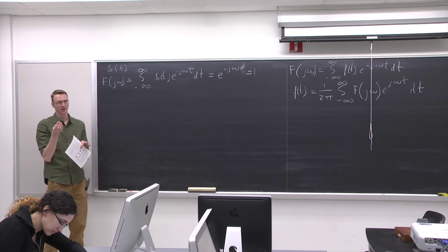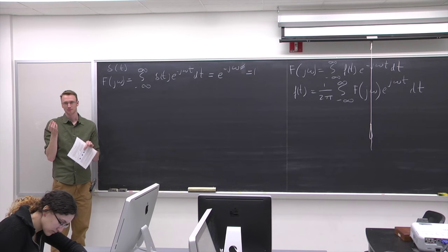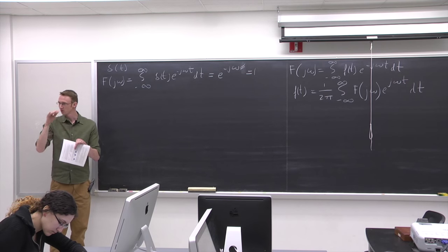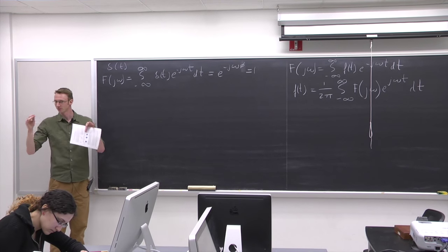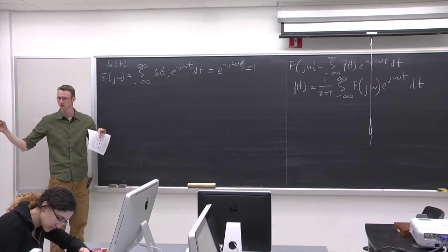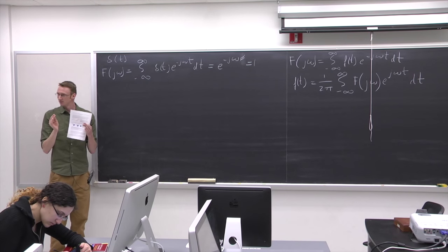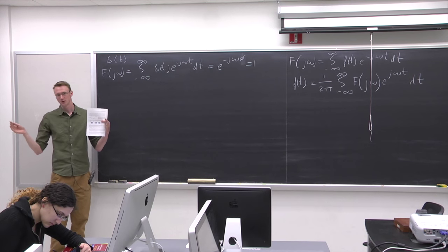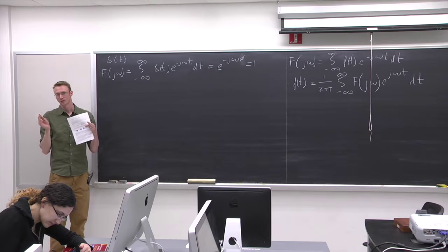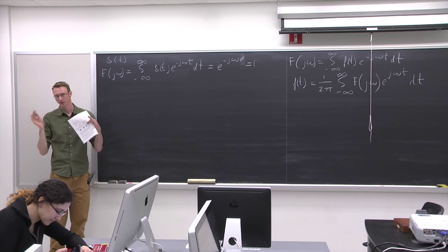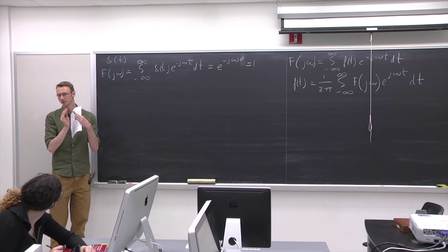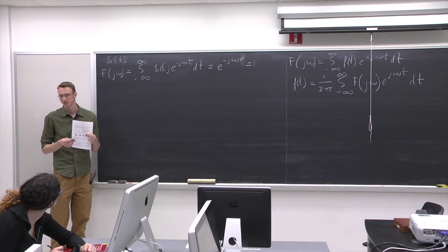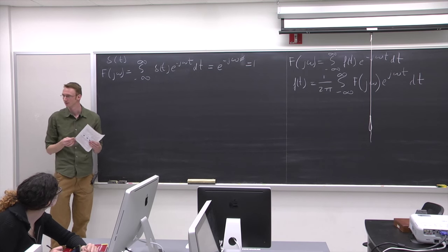We have an equal amount of all different frequencies of sinusoids. A way to think about that: imagine a cosine with one peak around zero and all other peaks elsewhere. As you add cosines of other frequencies, they won't line up away from zero but they'll all have their peak at zero — that's where you get your infinitely high peak.